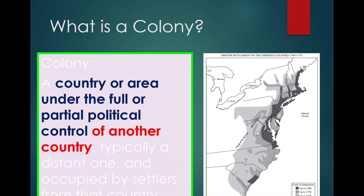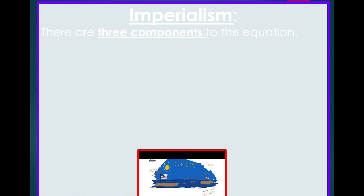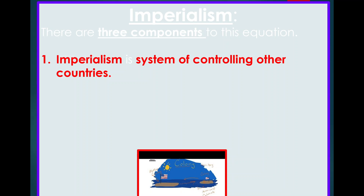America was once a colony, and then — what a surprise — America goes from being a colony to being a colonizer. Imperialism has three components to this equation.